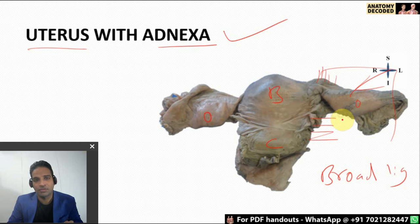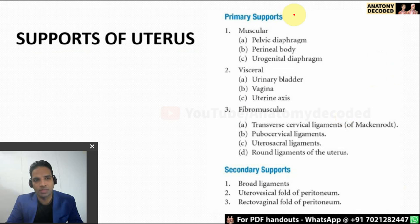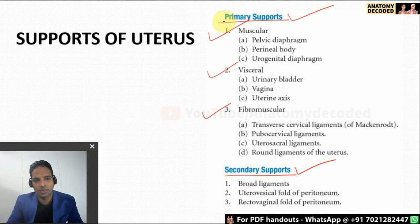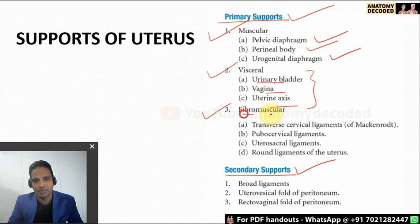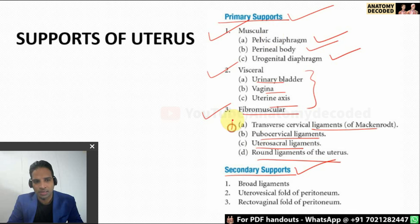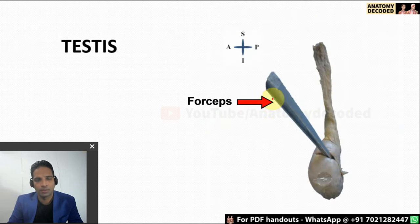One of the most frequently asked questions about the uterus — in both practical and theory exams — is the supports of the uterus. Divide them into primary and secondary supports. Secondary supports are folds of the peritoneum. Primary supports are further subdivided into three parts: muscular (pelvic diaphragm, perineal body, and urogenital diaphragm), visceral (urinary bladder, vagina, and rectum), and fibromuscular — the strongest supports — which are the transverse cervical ligament, pubocervical ligament, uterosacral ligament, and round ligament of the uterus. The most important support is the transverse cervical ligament of Mackenrodt, also referred to as the cardinal ligament.